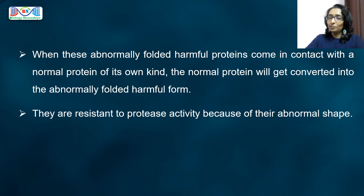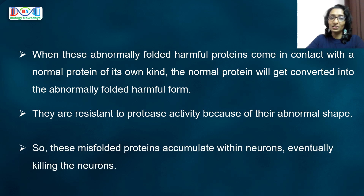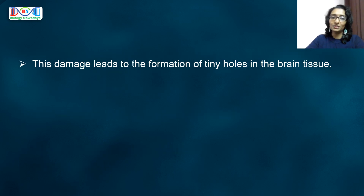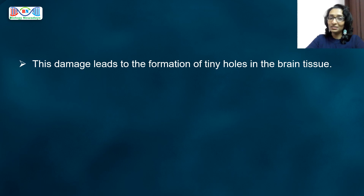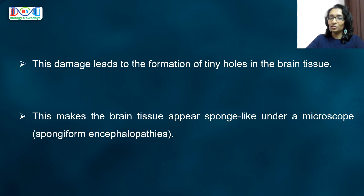By the way, proteases are enzymes that break down proteins. So, these misfolded proteins accumulate within neurons, eventually killing the neurons. This damage leads to the formation of tiny holes in the brain tissue, making the brain tissue appear sponge-like under a microscope. Because of this, prion diseases are often referred to as spongiform encephalopathy.